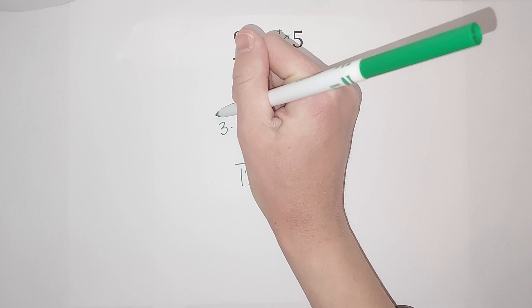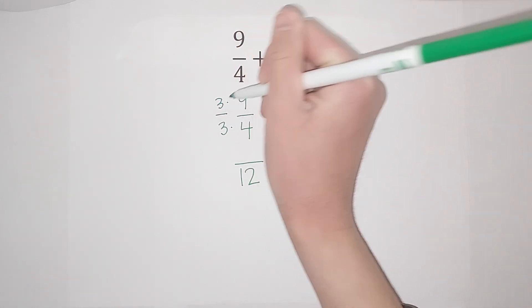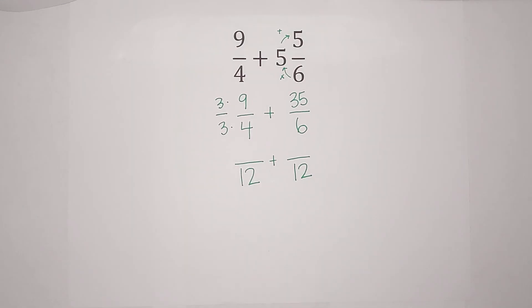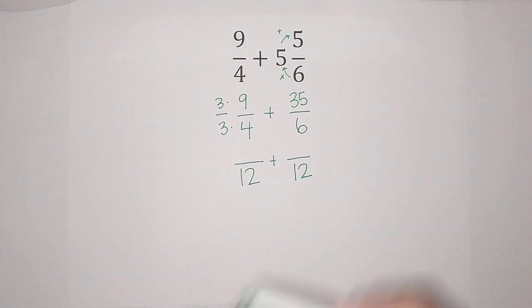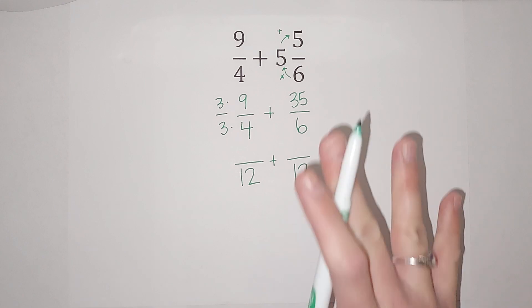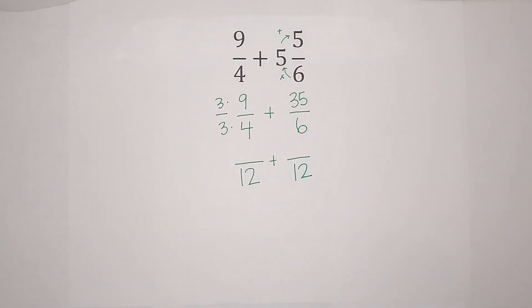But what I can do is multiply by 3 over 3. Why can I do that? Because 3 over 3 simplifies down to 1. So I'm really just multiplying by 1. It's just a weird looking 1. So I'm changing what the fraction looks like but not its value.